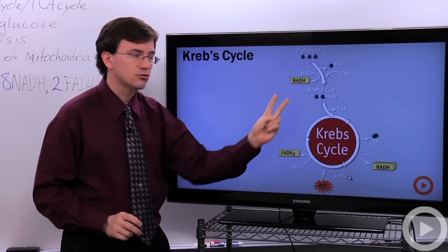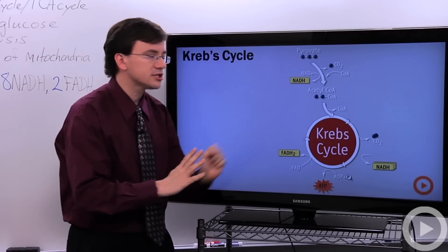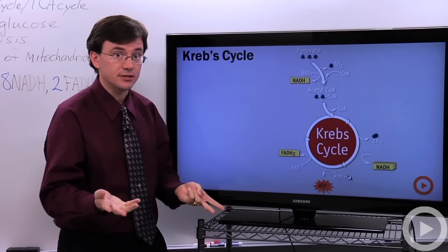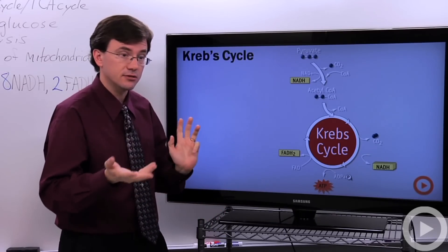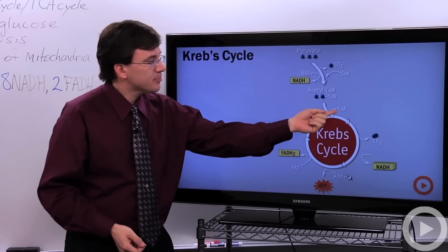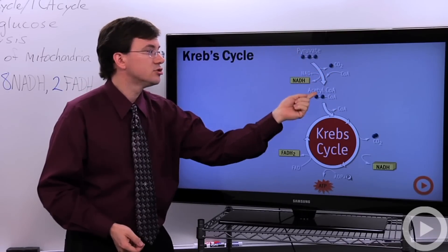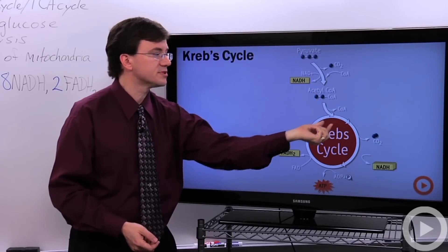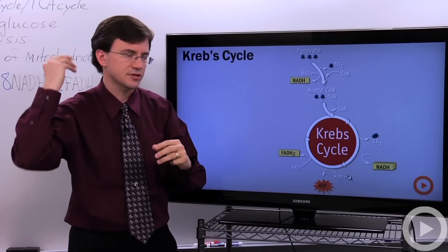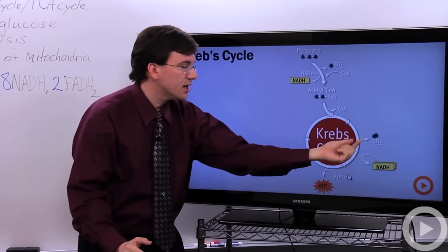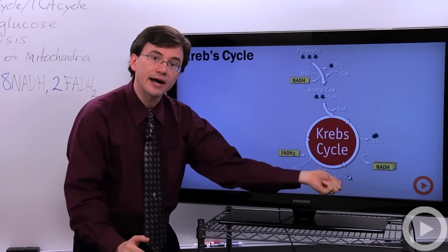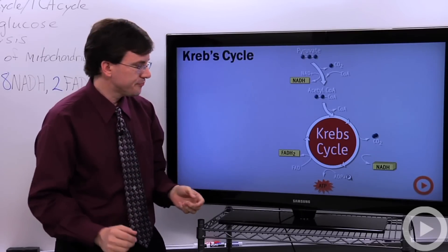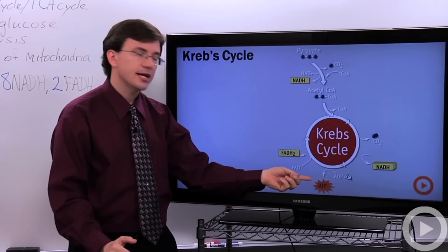That two-carbon acetyl group joins to a four-carbon molecule called oxaloacetate right at the beginning of the Krebs cycle, forming a six-carbon molecule called citric acid — which is why this is sometimes called the citric acid cycle. The coenzyme A goes back to pick up another two-carbon group from a broken-down pyruvate, shuttling in two-carbon groups that came ultimately from the glucose that entered the cell. A couple more carbon dioxides are plucked off, and every time you do that, you pull out some high energy electrons, putting them onto NAD+ and turning them into NADH. In one of these steps, you can also make a little bit of ATP.